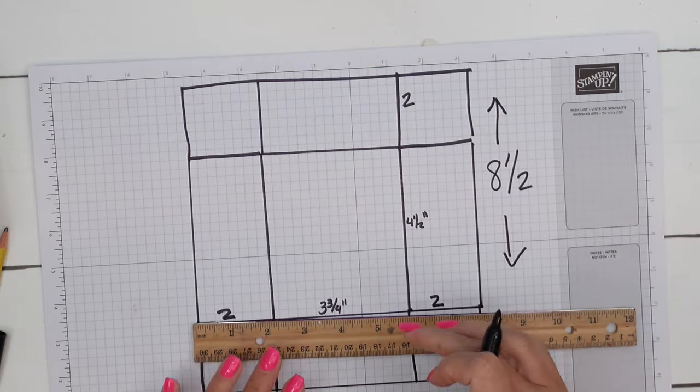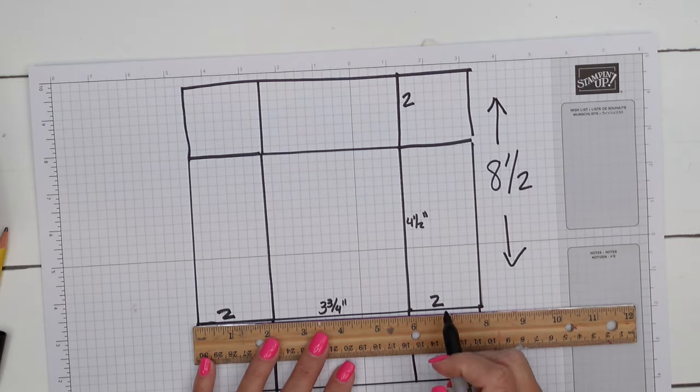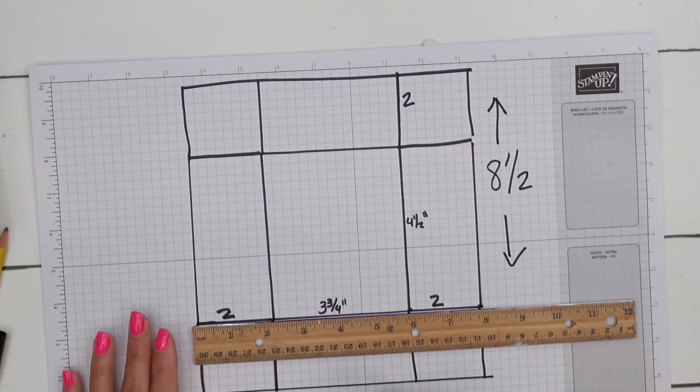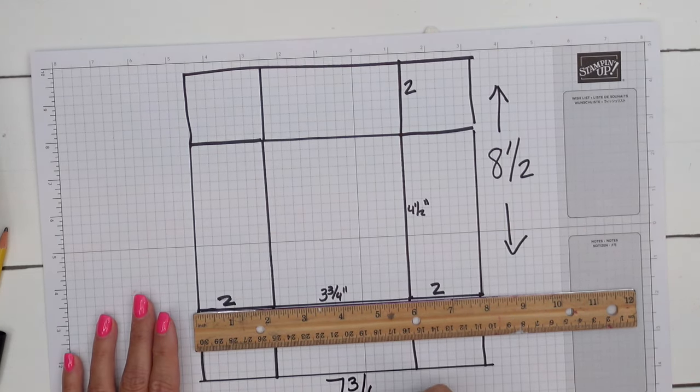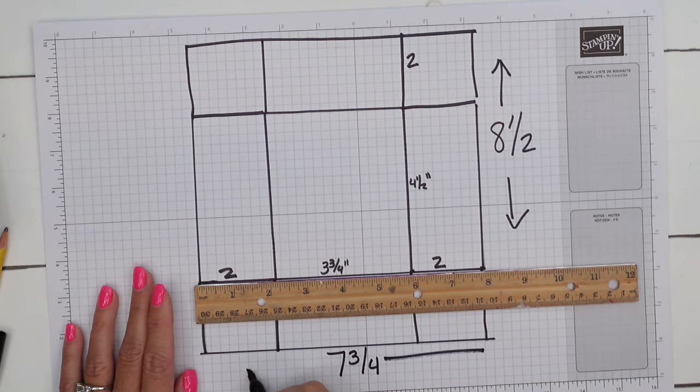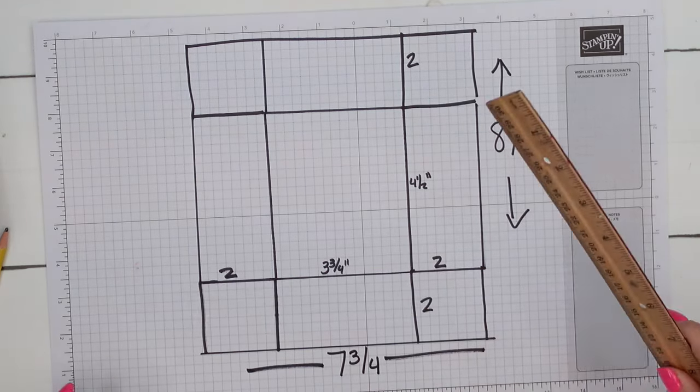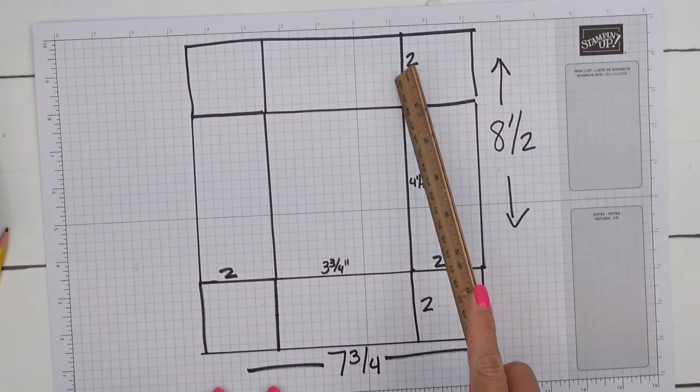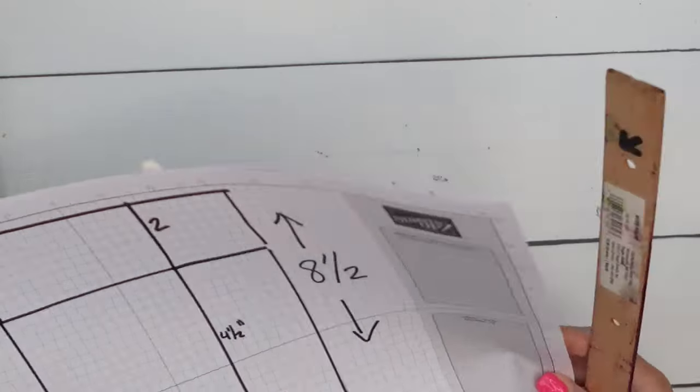This side, we had three and three fourths in the middle and we've added two and two. So seven and three fourths. So this side is seven and three fourths from here to here. So that's your box bottom, seven and three fourths by eight and a half. And we're going to score it at two inches on all four sides.